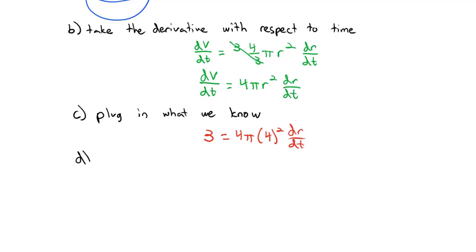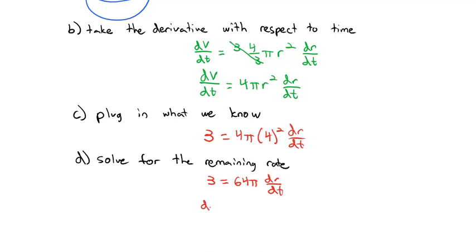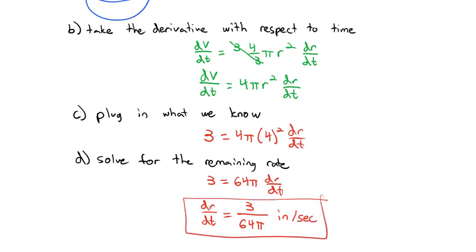All we have to do is solve for the remaining rate dr/dt. Simplifying: 4 squared is 16, times 4 is 64π dr/dt. Dividing 3 by 64π, we get 3 over 64π inches per second — that is the rate the radius is changing when it's exactly 4 inches and the volume is increasing at 3 cubic inches per second.